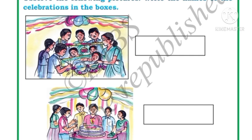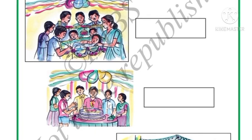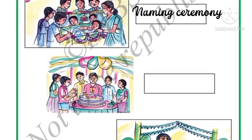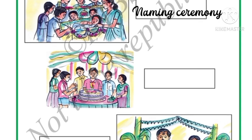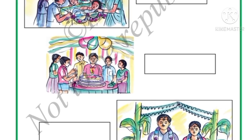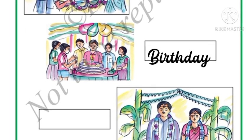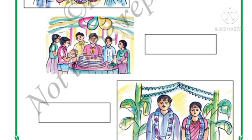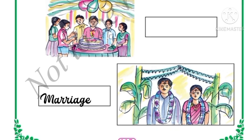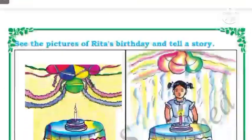Children, observe the following pictures and write the names of the celebration in the boxes. In the pictures you can see celebrations — you have to write which celebration it is. This one is a naming ceremony — you can see a baby sleeping in the cradle. This one is a birthday — you can see balloons, cakes, and candles. Next, this picture shows a marriage — the bride and groom are standing together.